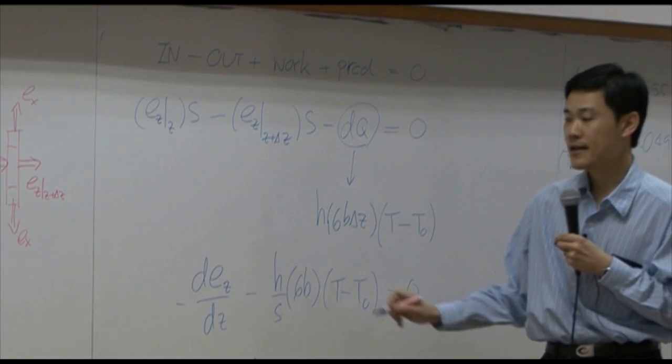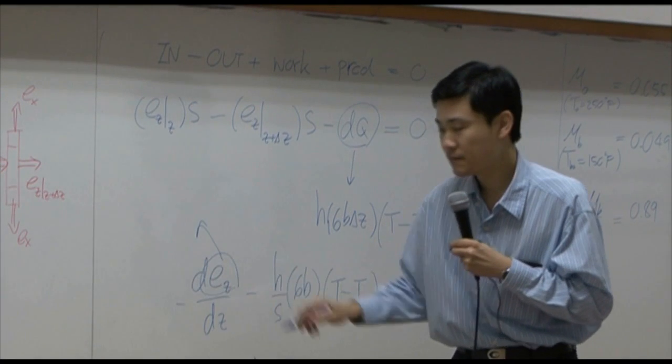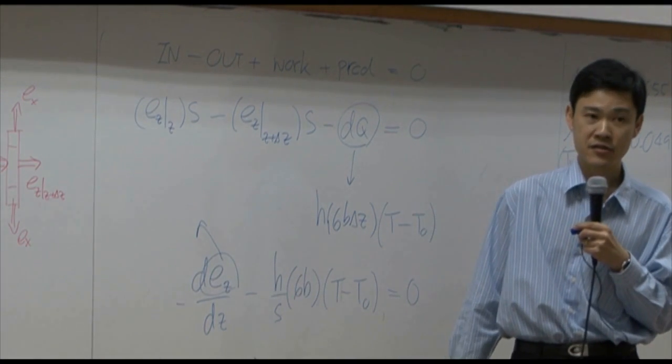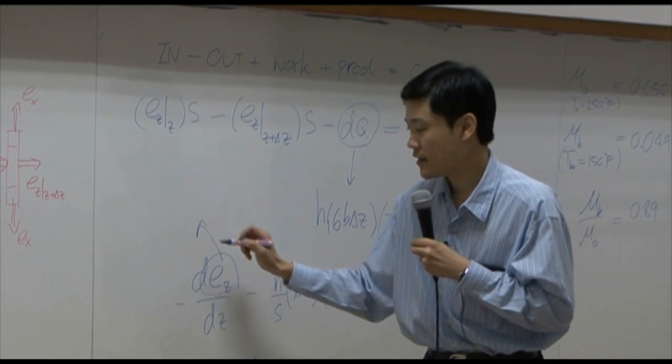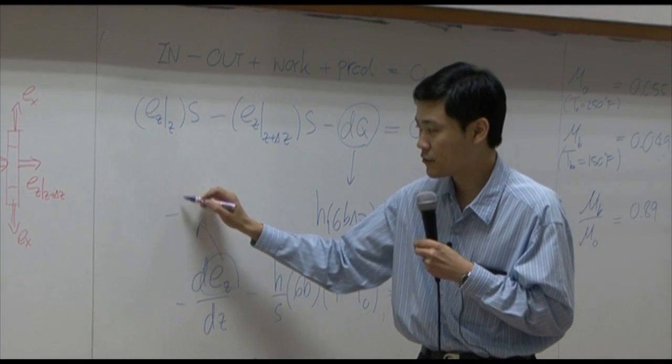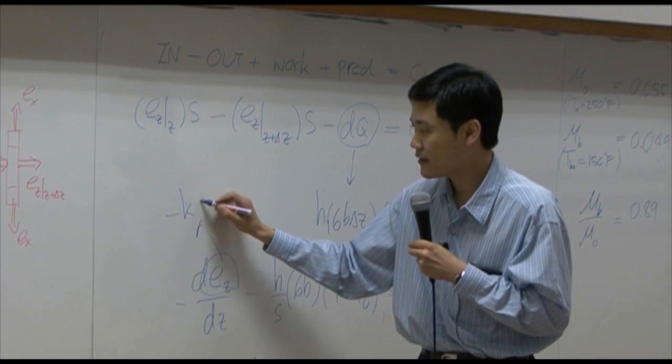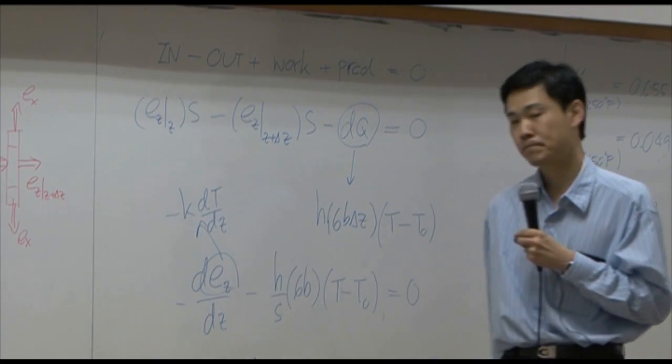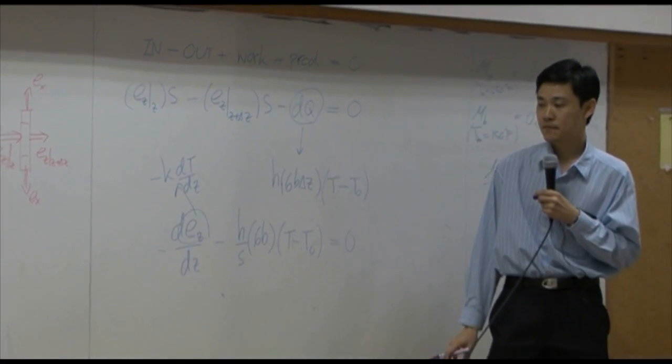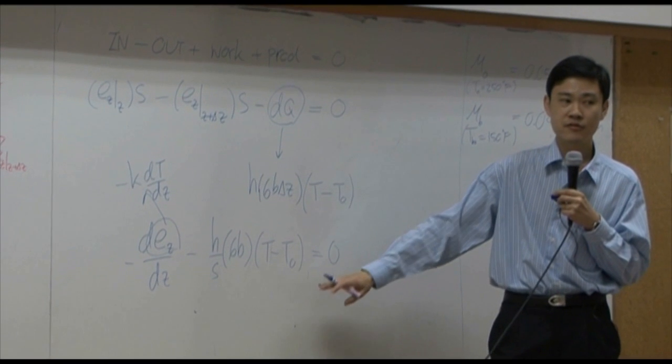And then, Ez here would be simply conduction. The energy flux due to conduction is K dT by dZ. Integration is straightforward.